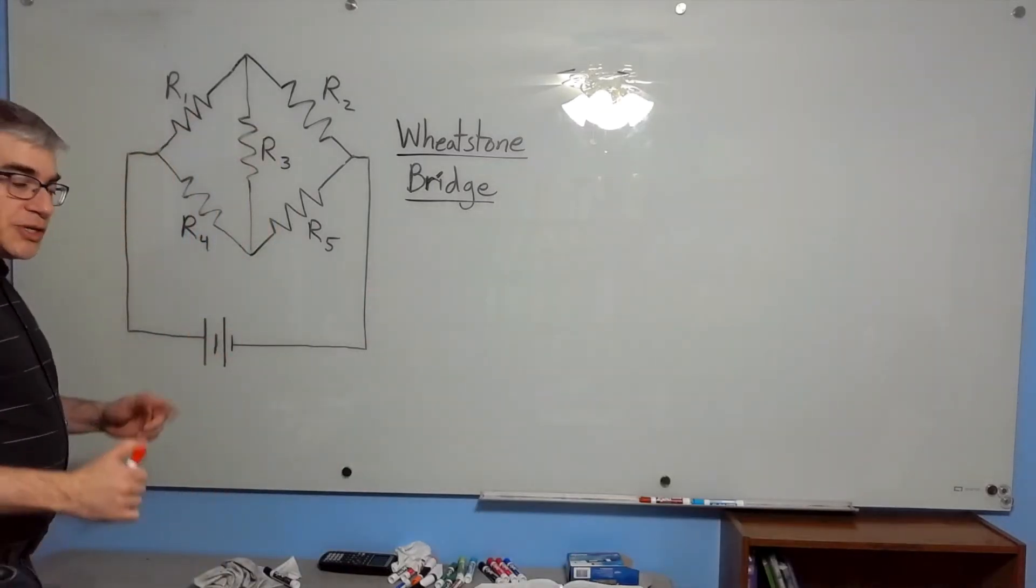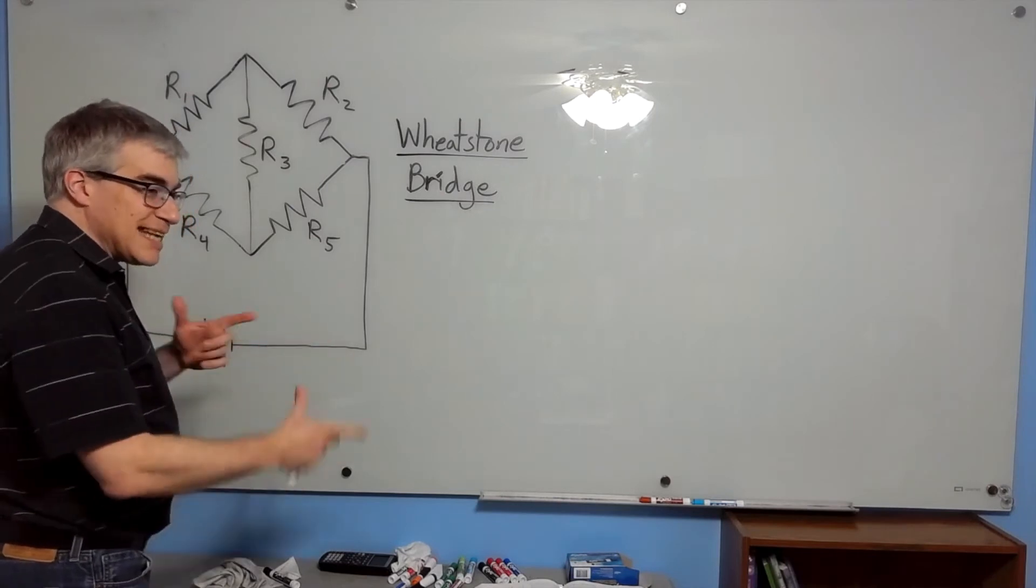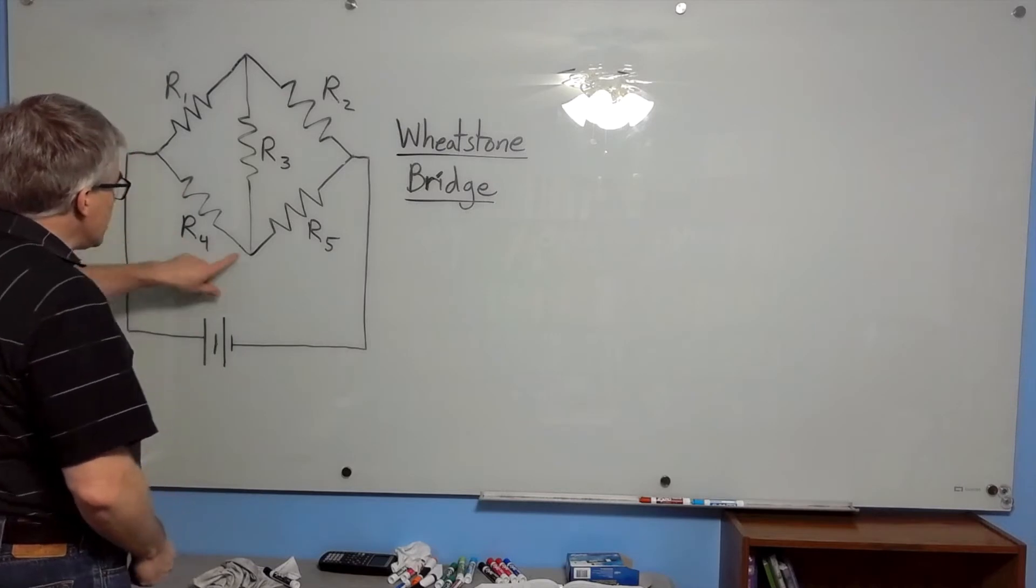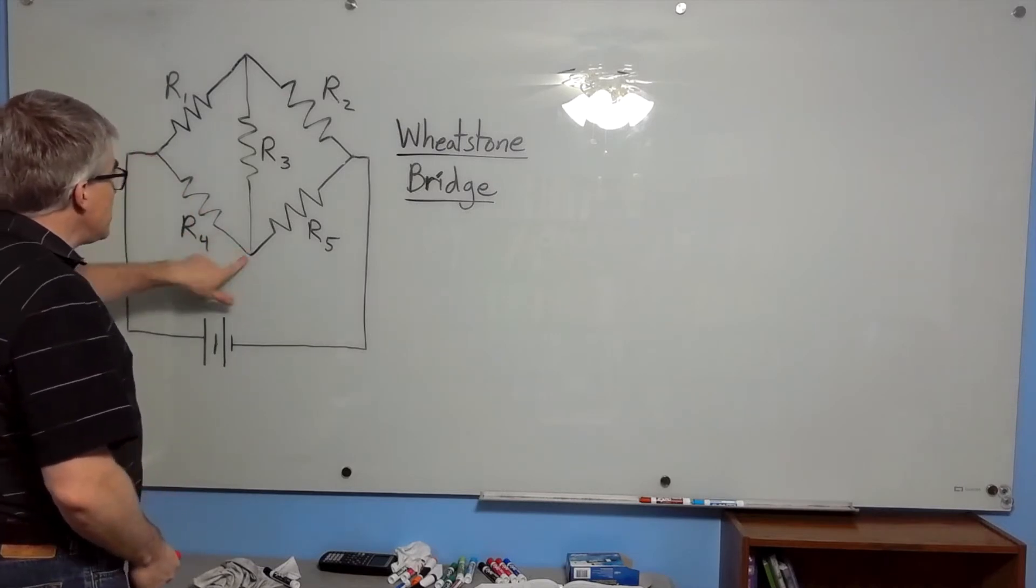In order to be in series, two resistors have to be connected end to end with no junction in between them. But every single one of these resistors terminates at a junction.